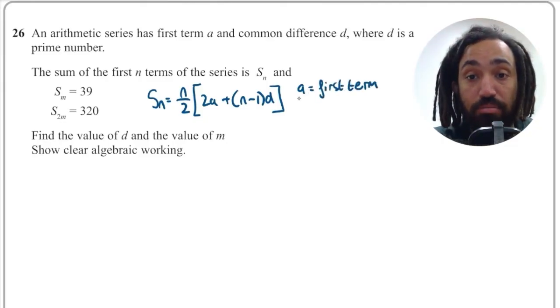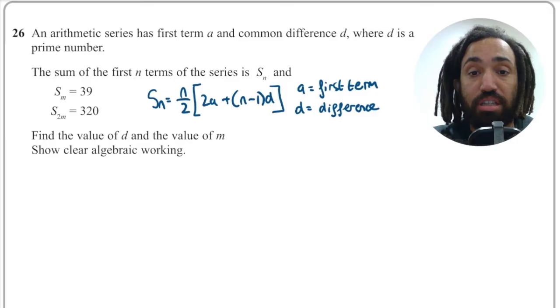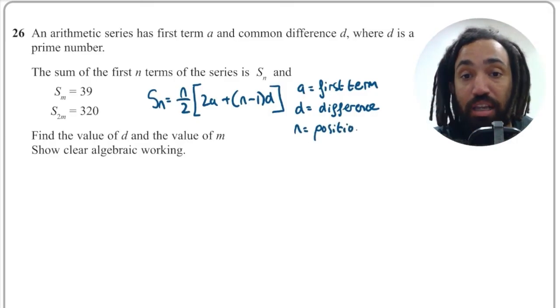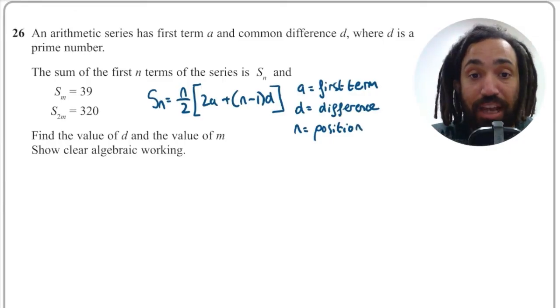A represents the first term and D represents the common difference and N represents the position of the term in the sequence or the position of how many terms you're going to be adding together.